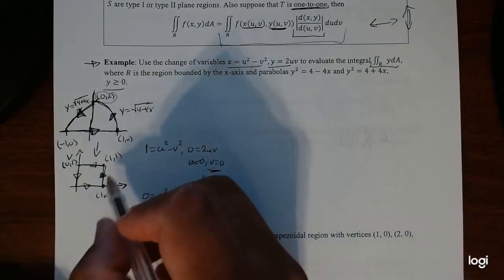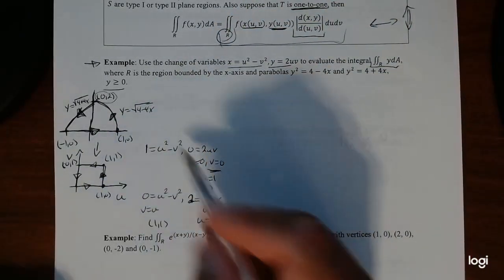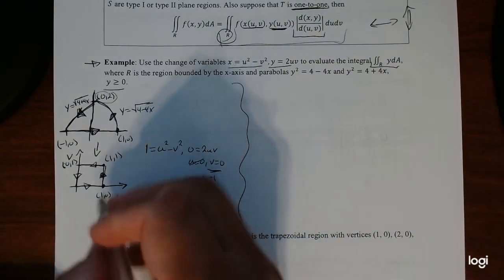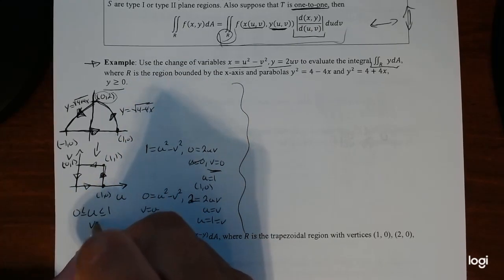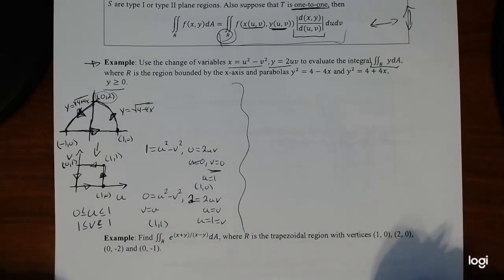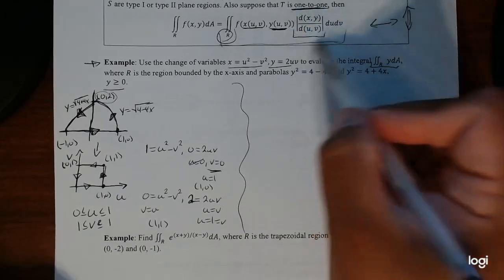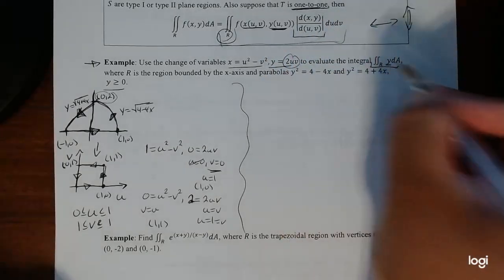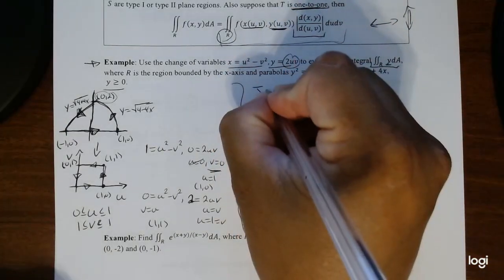This is important because it gives us our bounds for the conversion. Now u goes from zero to one and v goes from zero to one — those are our bounds with respect to u and v. The only remaining thing is to find the Jacobian, since x and y are already in terms of u and v. We'll substitute y in — we call that dA.